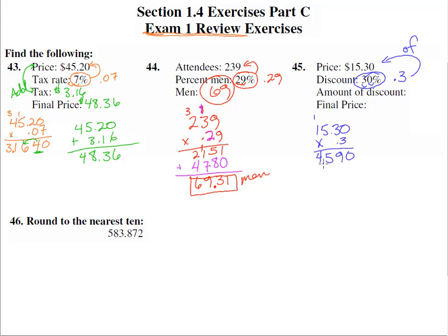There are one, two, three decimal places behind the decimal point. One, two, three right there. So $4.59 is the discount. $4.59 is the discount.